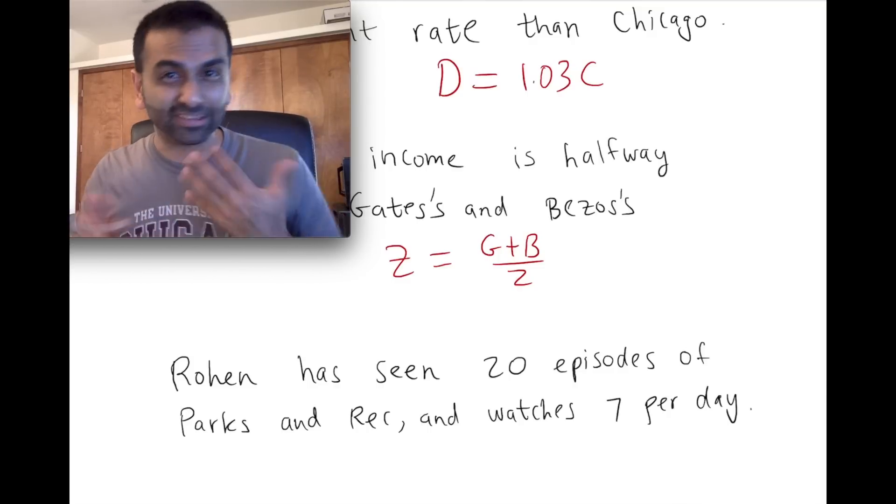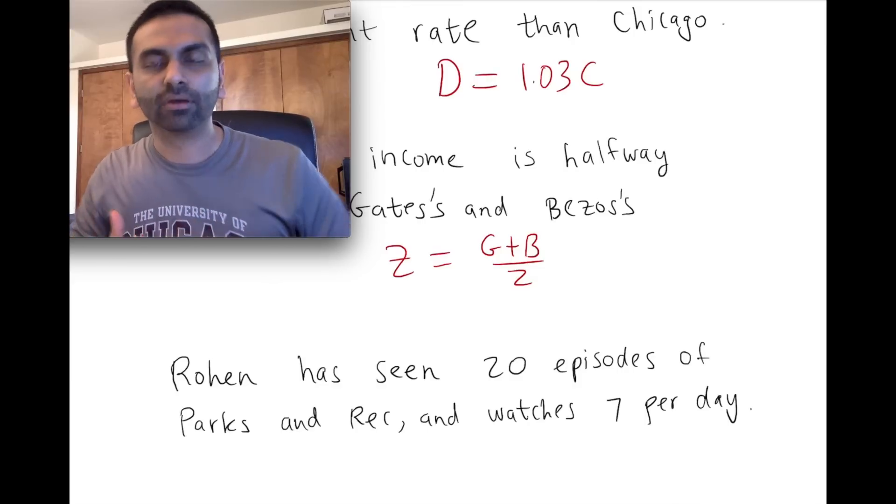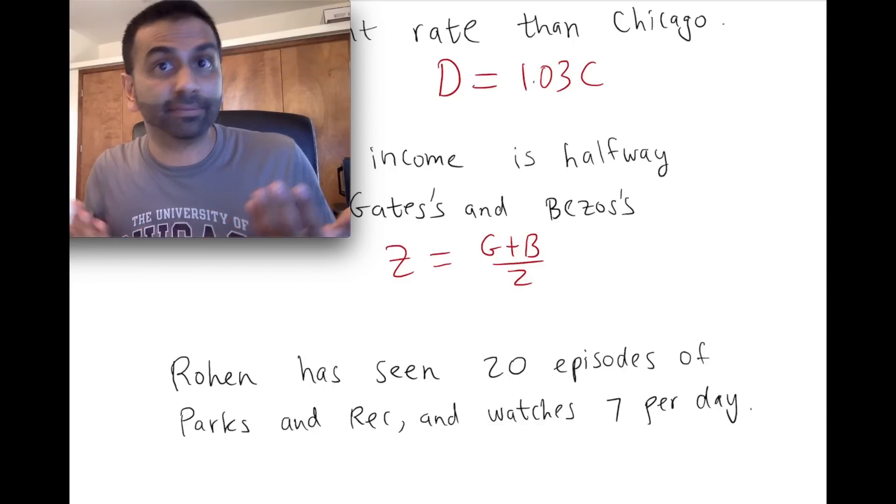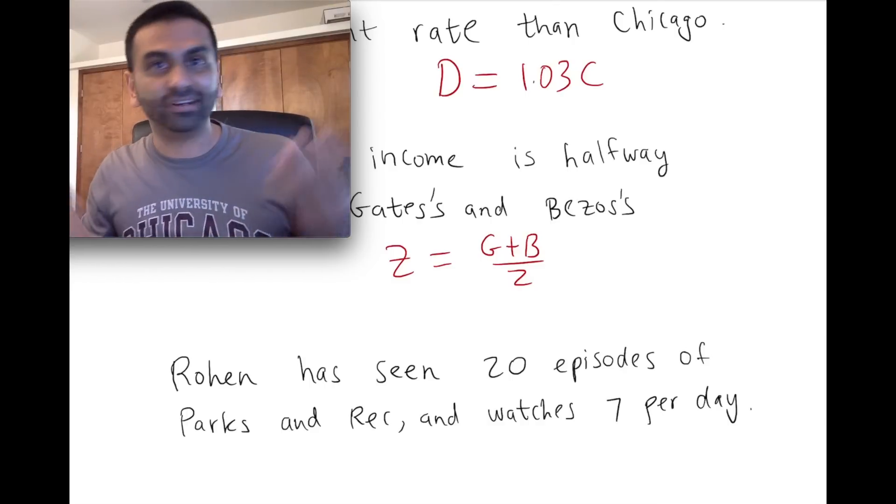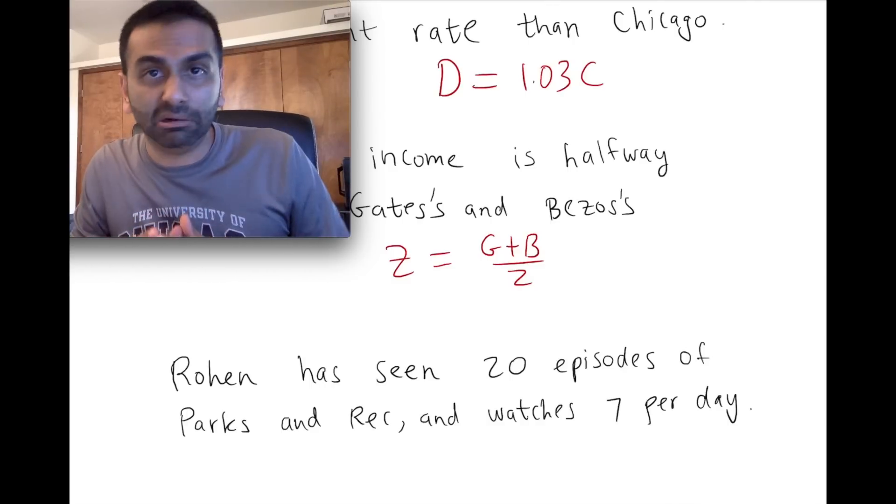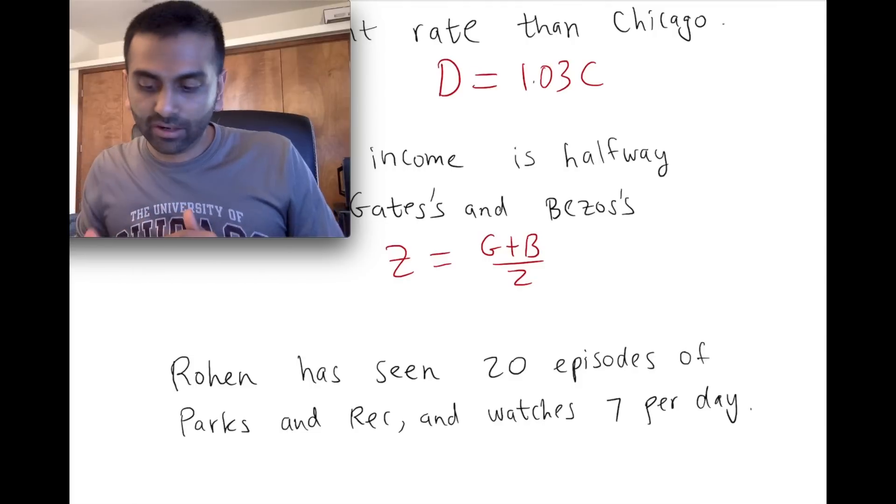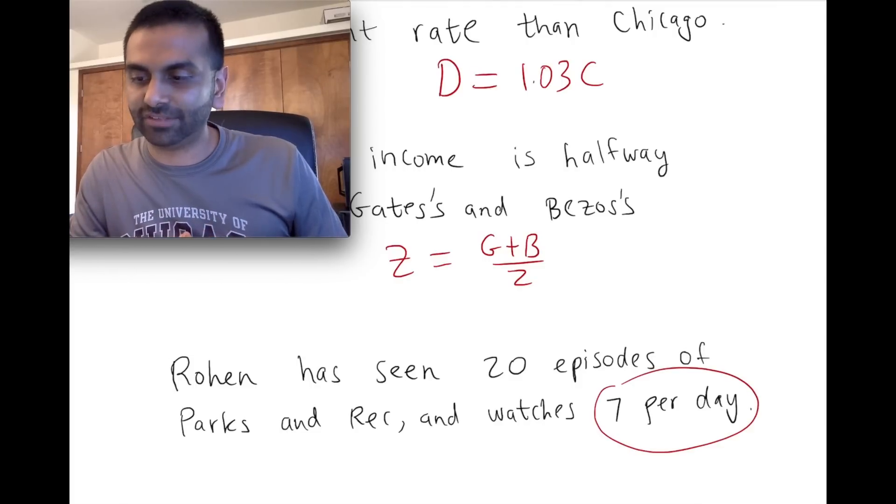So if we wanted to translate that into math, where the thing you're talking about is how many episodes has he seen a certain number of days from now—x days from now—how many episodes has he seen? Well, let's see. mx plus b. The slope is seven. Each day there's seven new episodes.